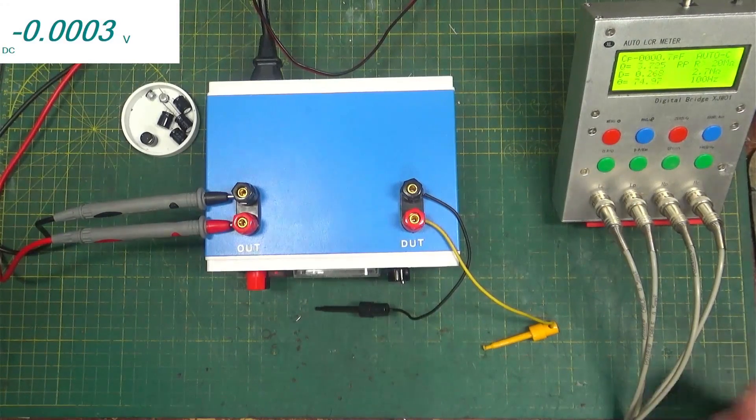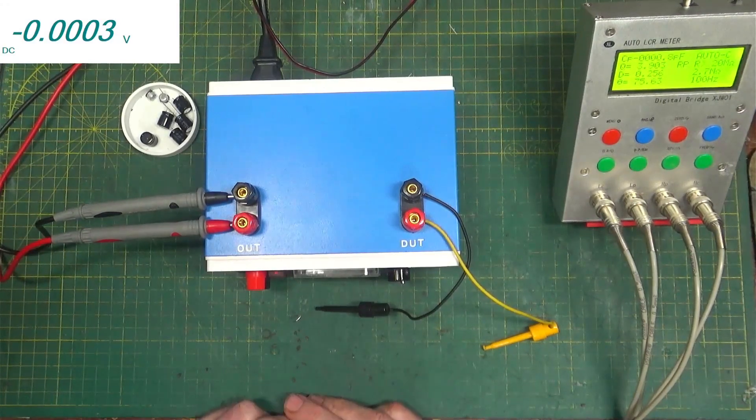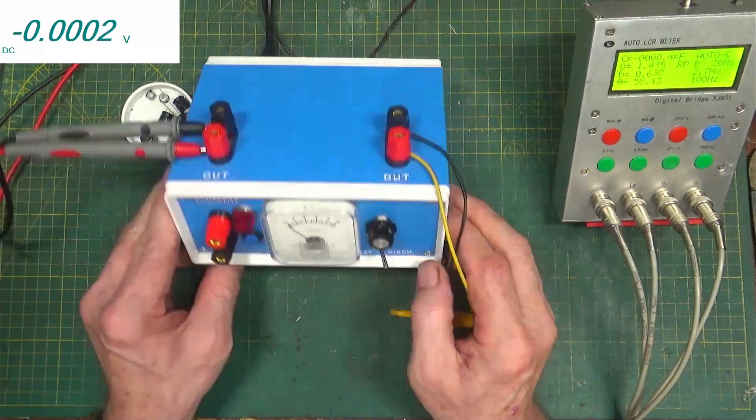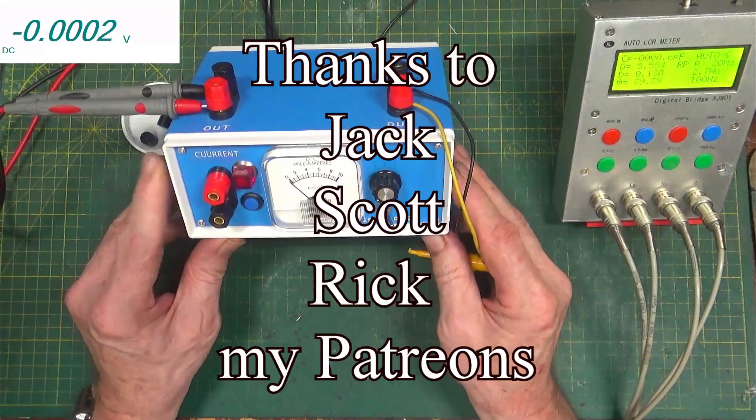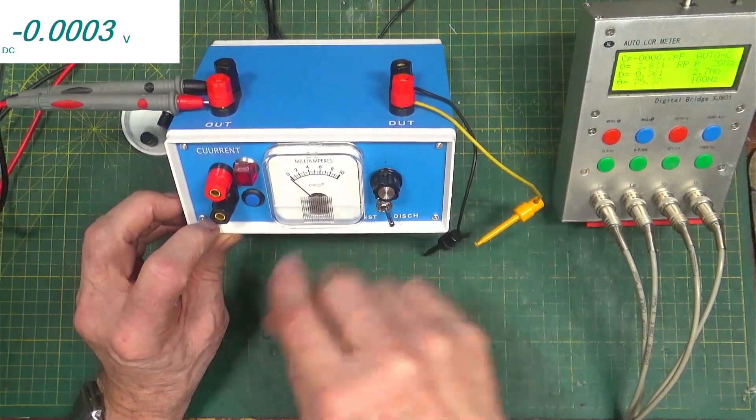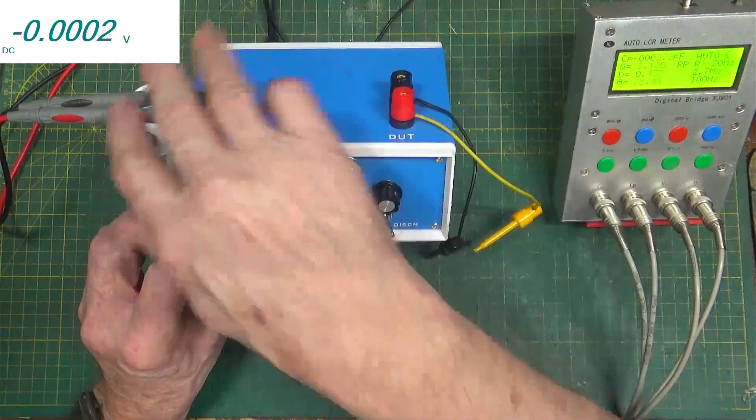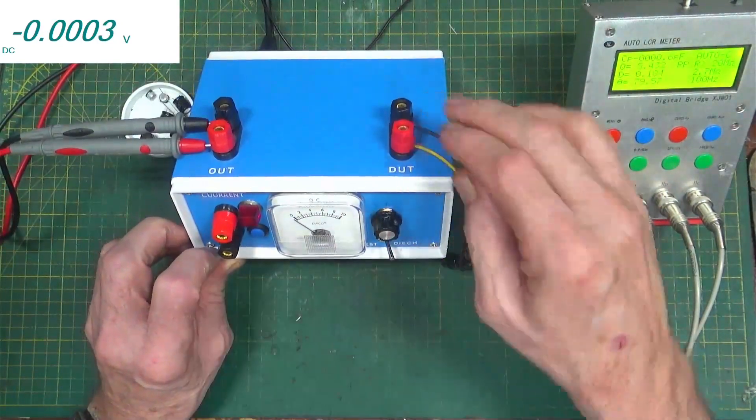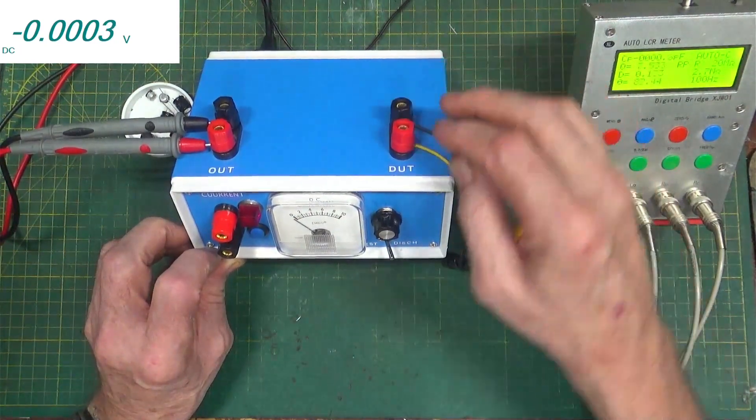Hello and welcome back to my bench. I made a video a little while ago about this little high voltage capacitor tester. At that time it didn't have a meter on it, it just had a place where you connected your meter for voltage up here and your current down here, and your device under test here.